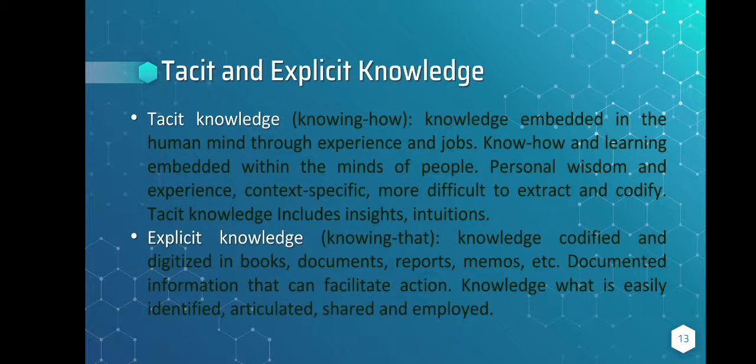There are two types of knowledge: tacit and explicit. Probably the most important principle of knowledge management is the distinction between implicit and explicit knowledge. Tacit knowledge, or the knowing-how, is knowledge embedded in the human mind through practice and work. Insights and intuitions are examples of tacit wisdom.